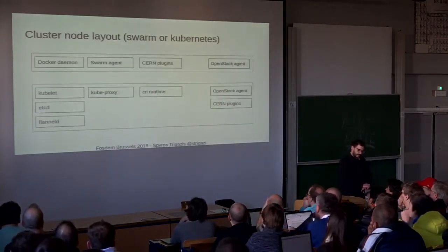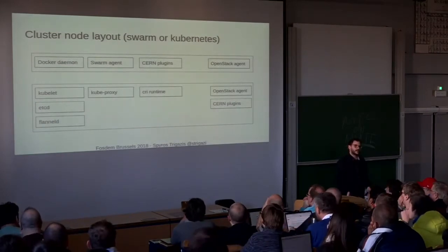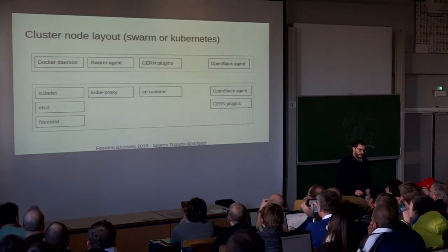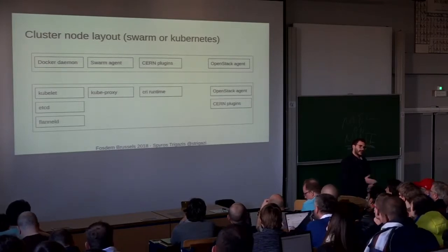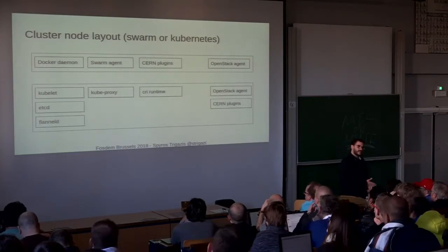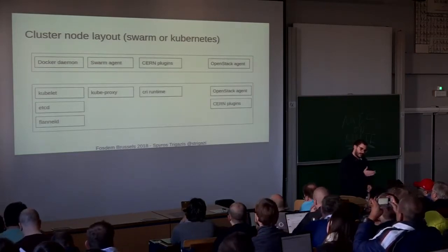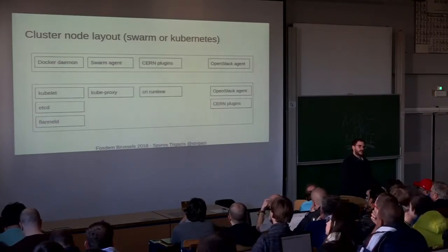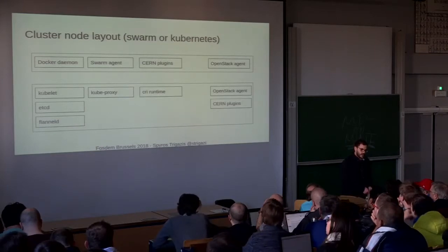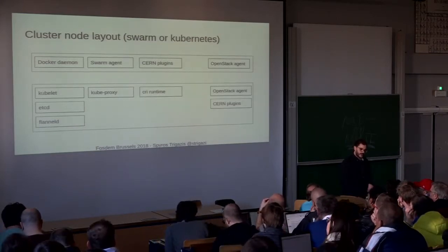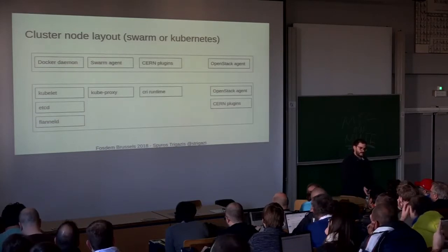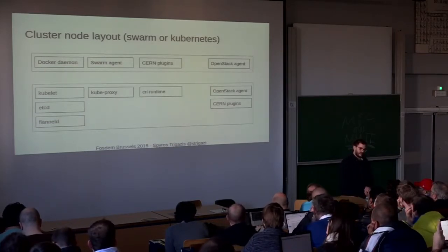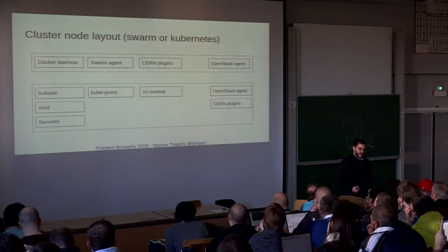This is how a node looks, whether it's Swarm or Kubernetes, in the environment Magnum creates. In the Swarm case, you have a Docker daemon; in legacy Swarm before swarm mode, you have a swarm agent running in a container on every node. You also have etcd on master nodes. We have some plugins which we run in containers, and an OpenStack agent that takes configuration from OpenStack and applies it to the nodes. In Kubernetes, we have more components: Flannel, etcd, a CRI runtime, the agent, and plugins.